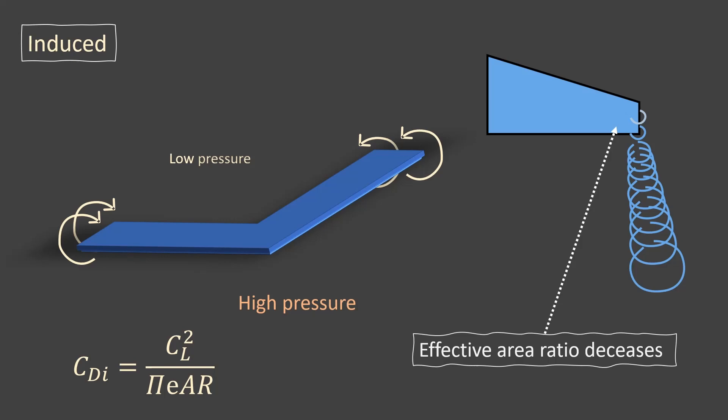The magnitude of the induced drag can be found out using the formula: coefficient of induced drag is equal to coefficient of lift squared divided by pi e into aspect ratio.